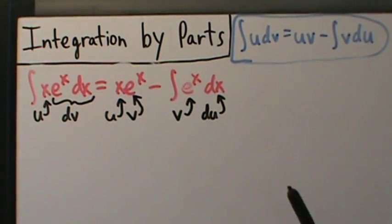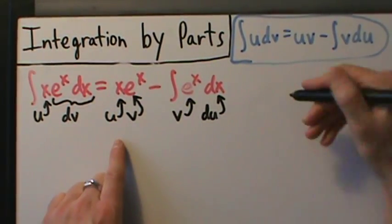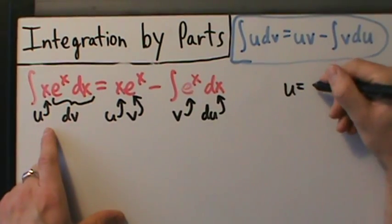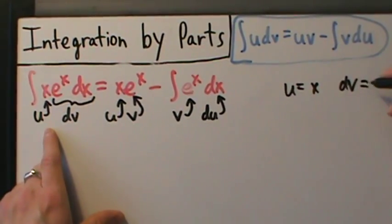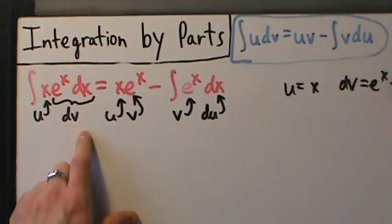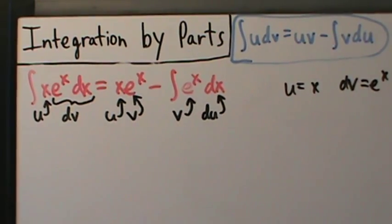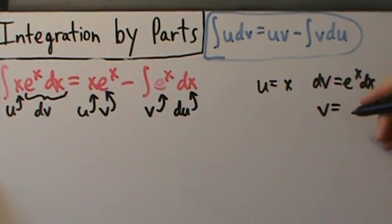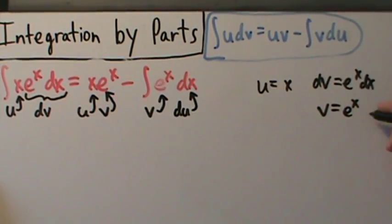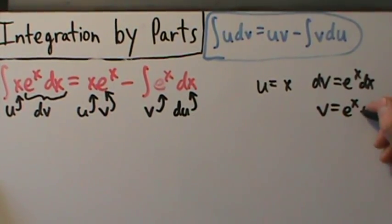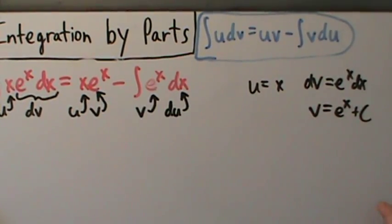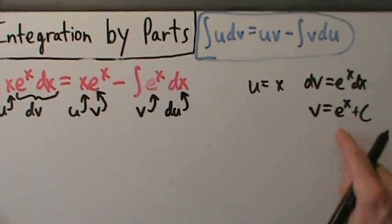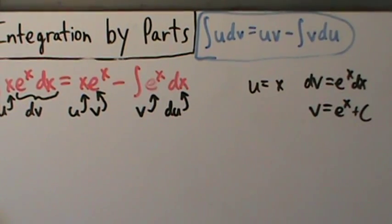And remember, when you choose u — so in this case u is x — then dv is automatically everything else. So in this case, dv was e to the x dx. And then remember, how do we get v? We integrate dv. So when you integrate this, you ought to have an arbitrary constant, but for integration by parts, you can just forget about the arbitrary constant when you get v from dv.